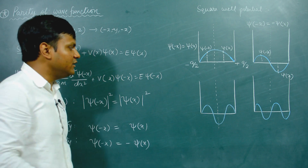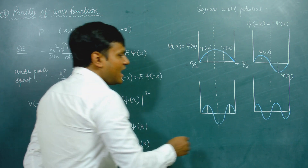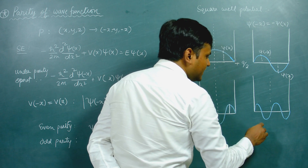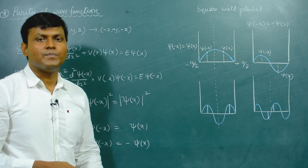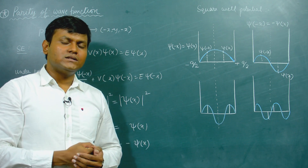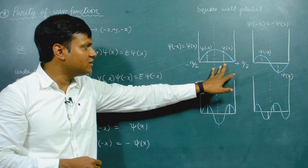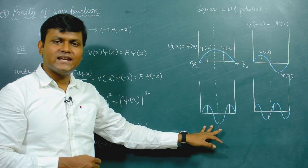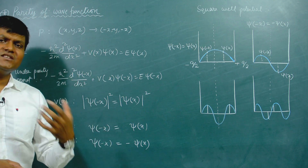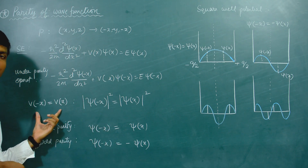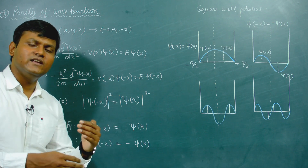For the second excited state, ψ(−x) = ψ(x), so this is an even parity wave function. For the third excited state, ψ(−x) = −ψ(x), so this is an odd parity wave function. The entire solution set of the infinite square well consists of alternating even and odd parity wave functions. This is a general property of any potential symmetric with respect to reflection along the origin — you will end up getting wave function solutions that are alternatively even and odd parity.